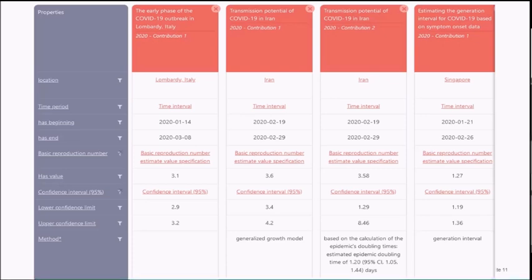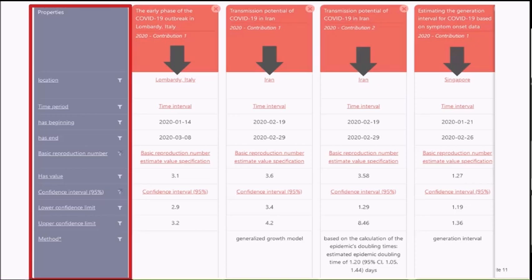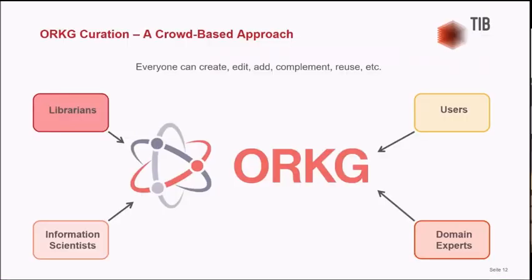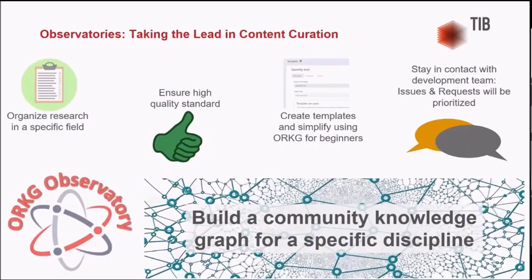We also have other approaches using a crowd-based method where librarians, information scientists, and domain experts who are researchers from different fields come together to create comparisons and other artifacts such as observatories. Observatories are an approach within the Open Research Knowledge Graph where a specific research community builds a knowledge graph for the community, ensuring high standards. They also create templates so that researchers do not have to be semantic experts — it is a question-answer-based template where a researcher just enters a few values from a research article or table. If you are interested in creating an observatory for your own research field, please contact us.